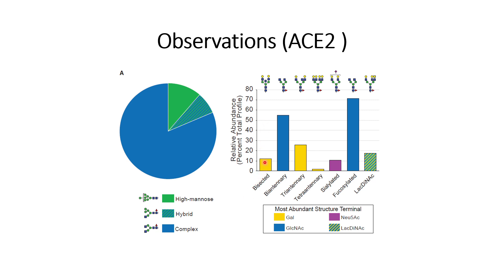The most abundant terminal sites of the glycans: galactose is dominant in complex glycans, whereas for bi-antennary fucosylated glycans the most abundant terminal site is GlcNAc. For tri-antennary and tetra-antennary glycans it is again galactose. For sialylated glycans, as the name suggests, the terminal site is sialic acid. Lac-diNAc glycans represent a multi-terminal mixture including sialylated and fucosylated glycans. Other glycans with different terminal ends are approximately 18 percent.